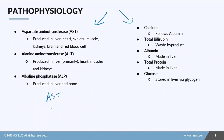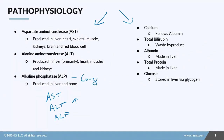For example, if your AST is elevated but your ALT and ALP are normal, you need to look at something other than the liver — AST is also found in the heart, skeletal muscle, kidneys, brain, and red blood cells. If your AST and ALP are normal but your ALT is elevated, you would look at the heart, muscles, or kidneys. ALP is produced in the liver and bone.